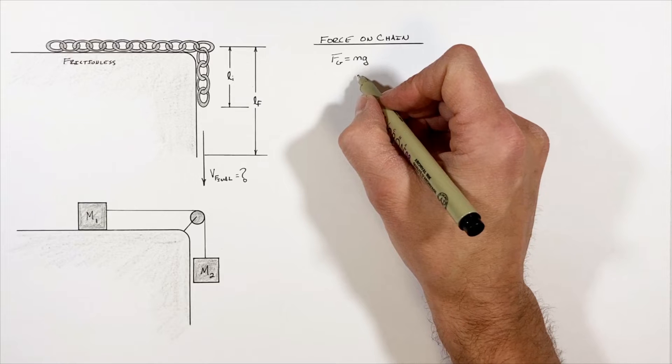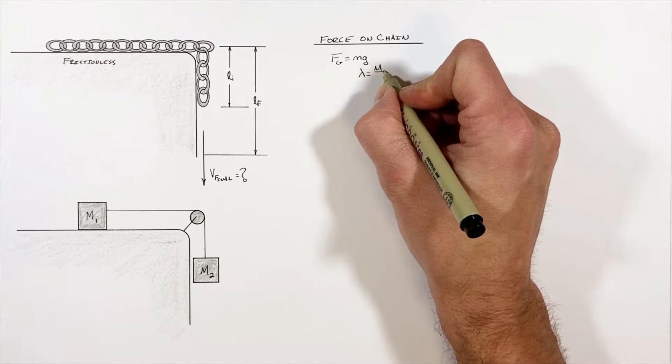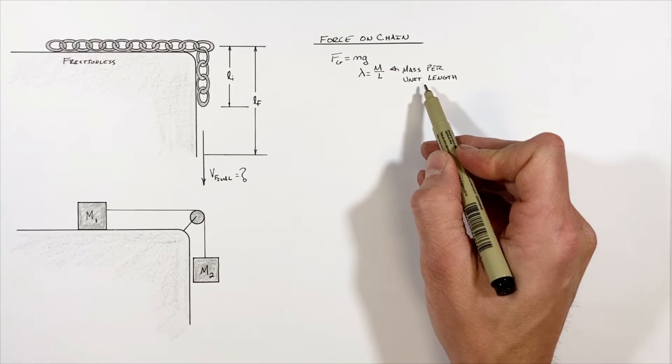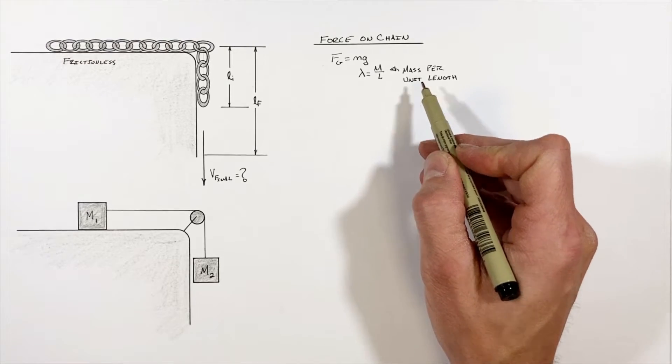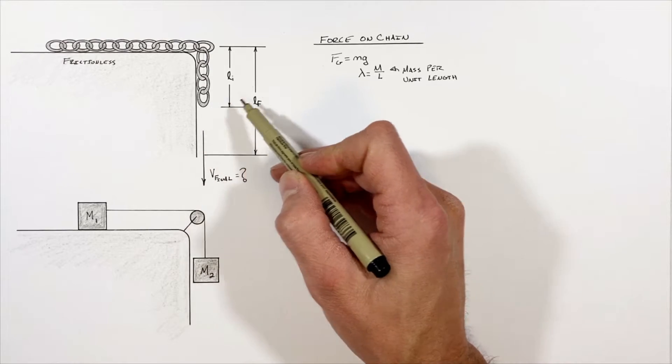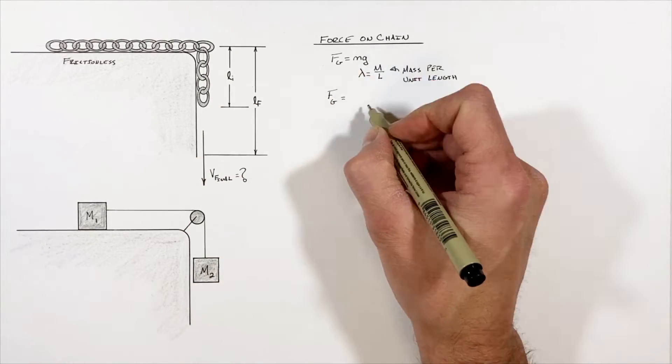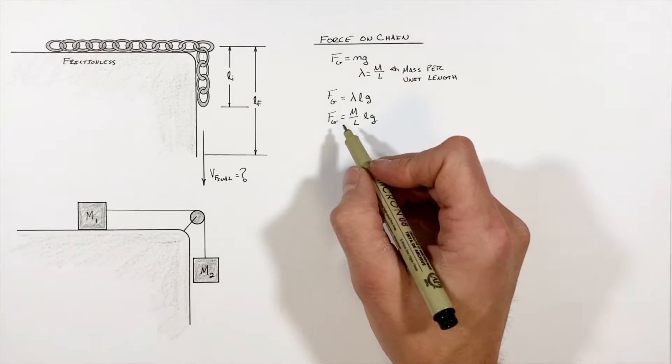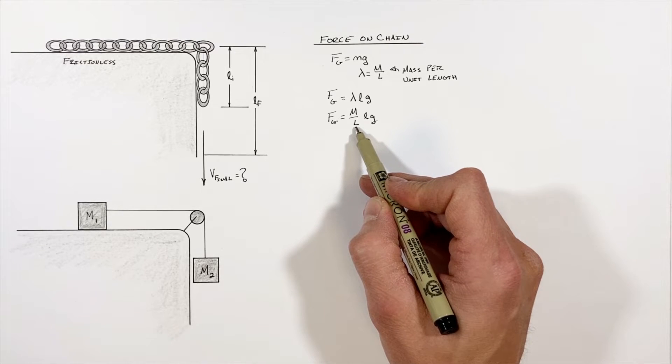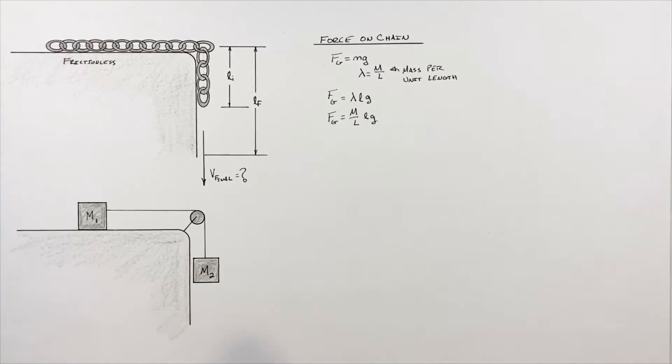You'll sometimes see this referred to as linear mass density. So knowing the mass per unit length multiplied by the length of chain hanging off the edge of the table is in fact the mass of chain hanging off the edge of the table, we get an expression for the force by gravity relating the total mass and length of the chain to how much length of chain is actually hanging off the edge of the table.